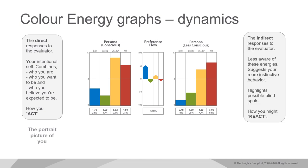Then I share with them the less conscious graph — it's more of a candid photograph: someone took it of you when you were unaware of your own behavior. A key component to this graphs page that I like to share is that brain science estimates we are only consciously aware three to five percent of the time. Meaning, we operate as the right-hand less conscious graph, operating out of a mindset that's not aware of how we're showing up potentially 95 percent of the time.